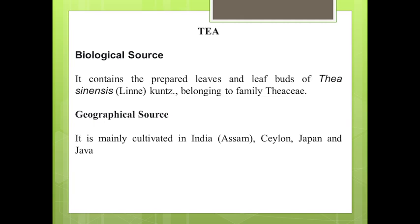Welcome students. In this video lecture, the topic is flavonoids. The drug is tea. The biological source consists of prepared leaves and leaf buds of Thea sinensis, belonging to family Theaceae. The leaf buds and leaves are the drug parts used.